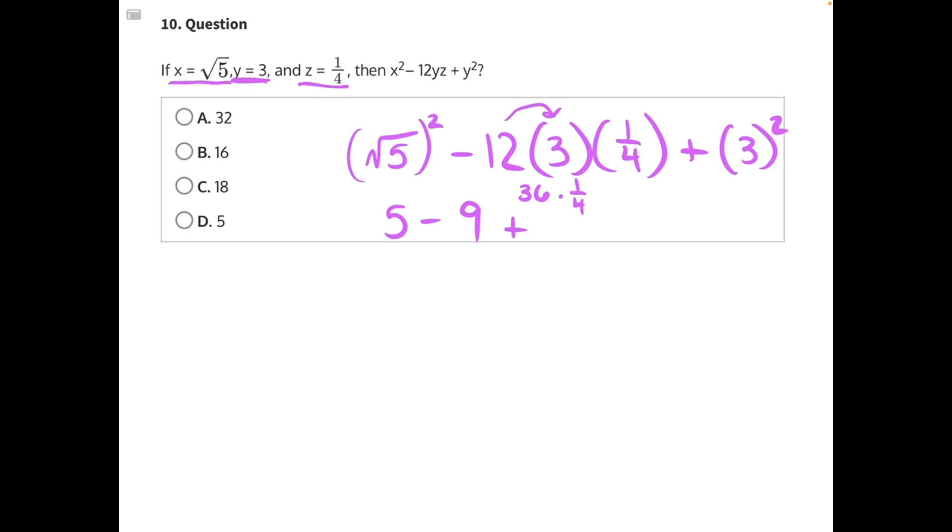Plus 3 squared is 3 times 3, which will also give us 9. Then our next step, we have a negative 9 plus a positive 9. Those are complete opposites and will cancel each other out, leaving us with just 5, making D our correct answer.